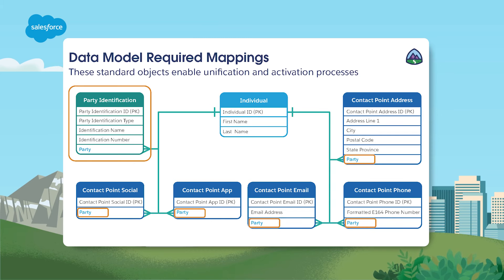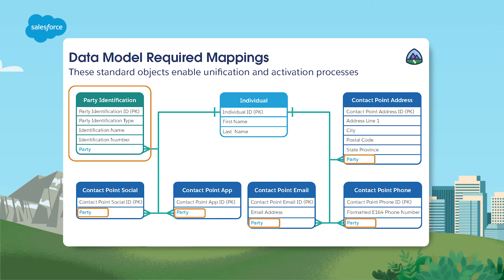To enable unification and activation processes, you need to map your data correctly. With Data Cloud, the system can only unify profiles if they are mapped correctly to the individual object and one other element — a contact point object or a party identifier object. Mapping to the individual DMO is required for all data sources that have a category of profile data, as they are meant to represent individual people. The reference to the individual objects in other objects within the data model is the party attribute — the foreign key. You also need to map at least one of the contact point channel objects. These objects contain contact details for the individuals, such as email addresses, phone numbers, postal addresses, mobile application registration, and social media handles.